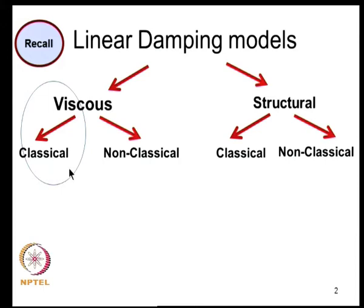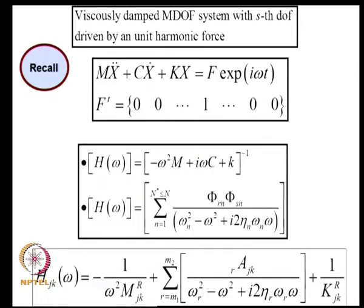The classification into classical and non-classical depends on whether the undamped normal modes uncouple the equation of motion. In a classical damping model, the undamped normal modes diagonalize the damping matrix, whereas in non-classical damping models that won't happen. We discussed finding the frequency response function for viscously damped multi-degree-of-freedom systems, and the matrix of FRFs can be evaluated either by inverting the dynamic stiffness matrix or as a summation over undamped normal modes.